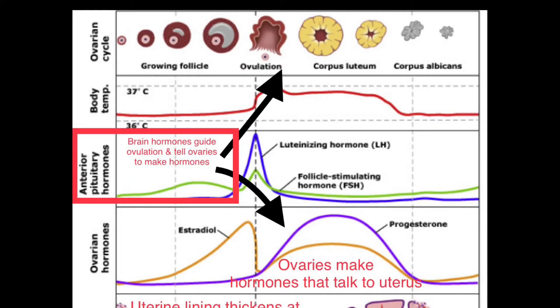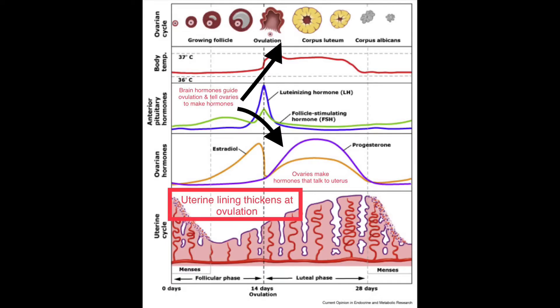When we're thinking about ovulatory dysfunction, we're always thinking about the way that our brain communicates to our ovaries and how our ovaries then communicate to our uterus — that is a big portion of how our periods actually work. The brain communicates with the ovaries and tells the ovaries when it's time to ovulate, when it's time to release our female hormones, which are estrogen and progesterone, and when we should actually be releasing that egg that has an opportunity to be fertilized.